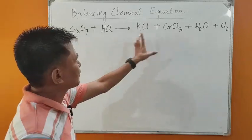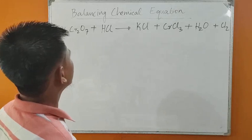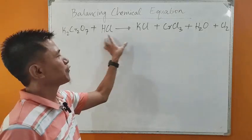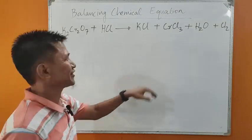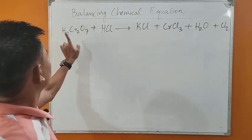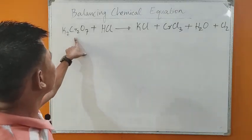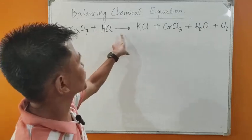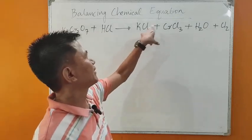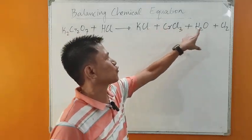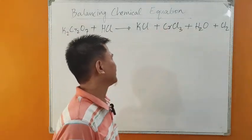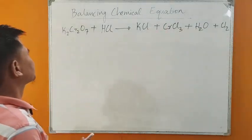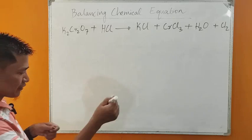We have a chemical equation here, and we will balance this equation. Potassium dichromate reacts with hydrochloric acid to produce potassium chloride, chromium chloride, water, and chlorine. Now, let's balance this chemical equation.